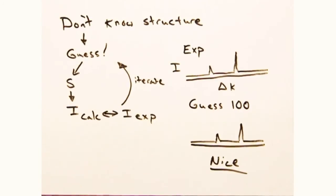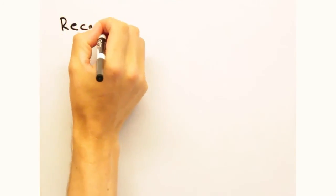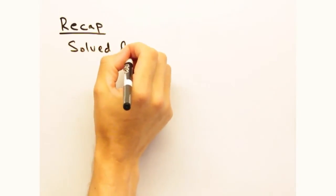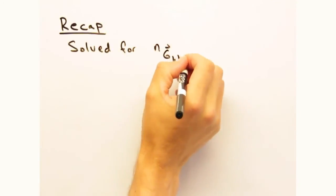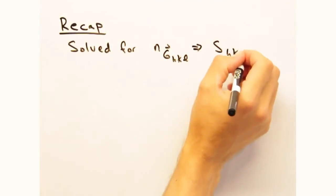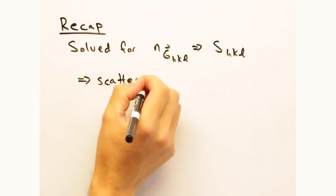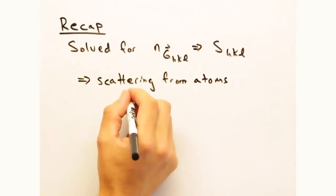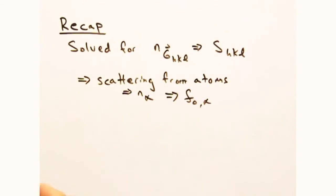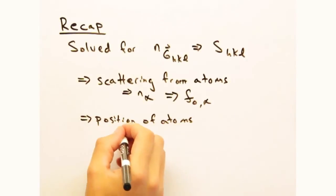So to recap, we were able to solve for the Fourier coefficients at a particular hkl in terms of the scattering density within the cell. We called that term the structure factor and separated it into terms that describe the scattering from each atom and terms that describe the position of the atoms within the cell.